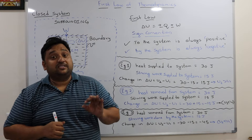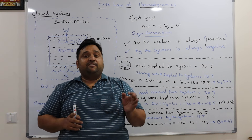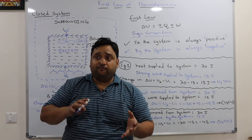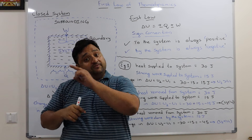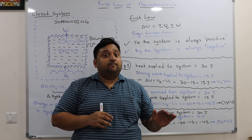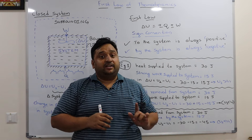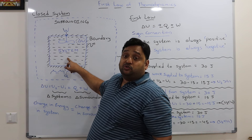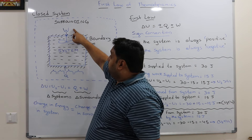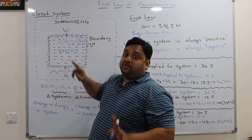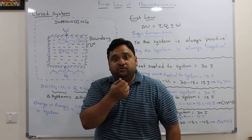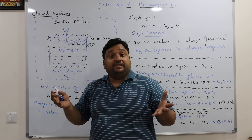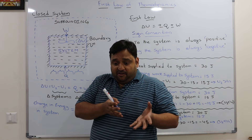Now let us discuss sign convention in thermodynamics — very important. There are modern and older sign conventions, and they differ depending on the book you refer to. In older books, heat energy supplied to the system is positive, but work supplied to the system is negative. This was not wrong at the time — it was used because people worked with heat engines, where for a given heat input to a piston and cylinder, you would extract work output.